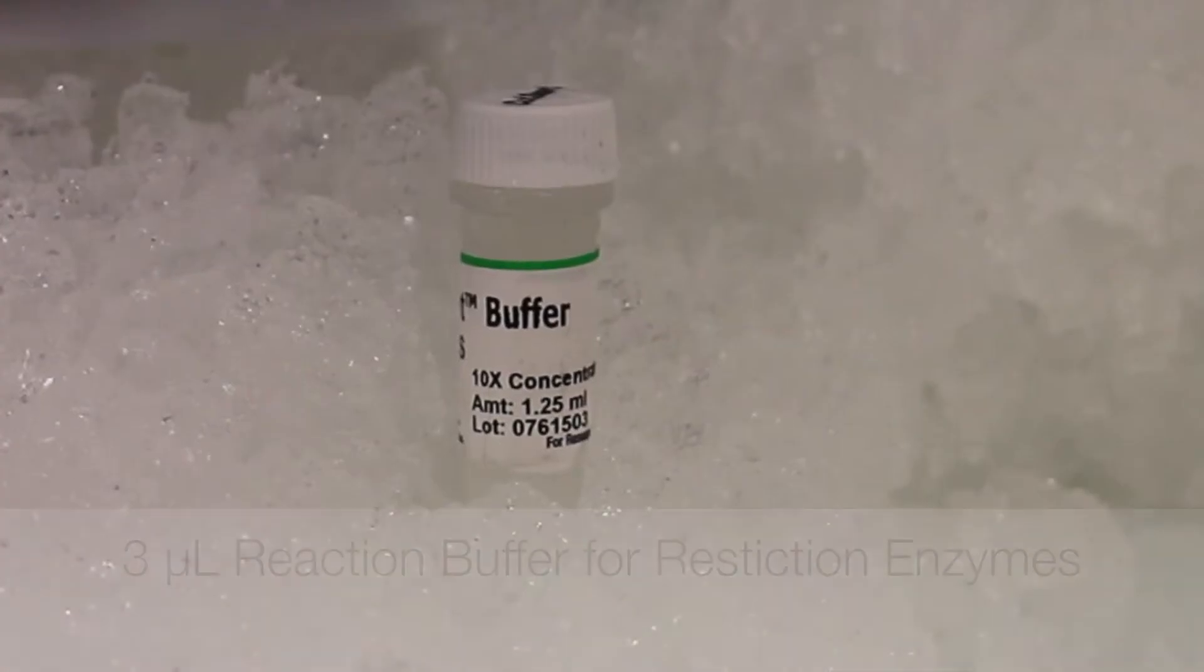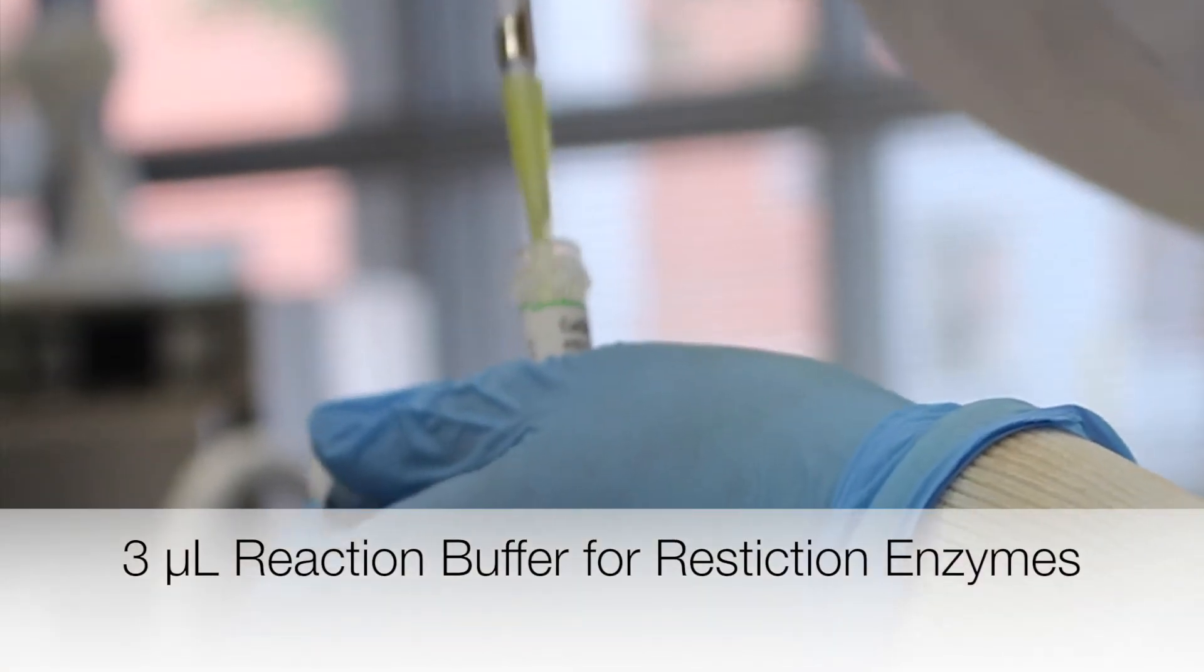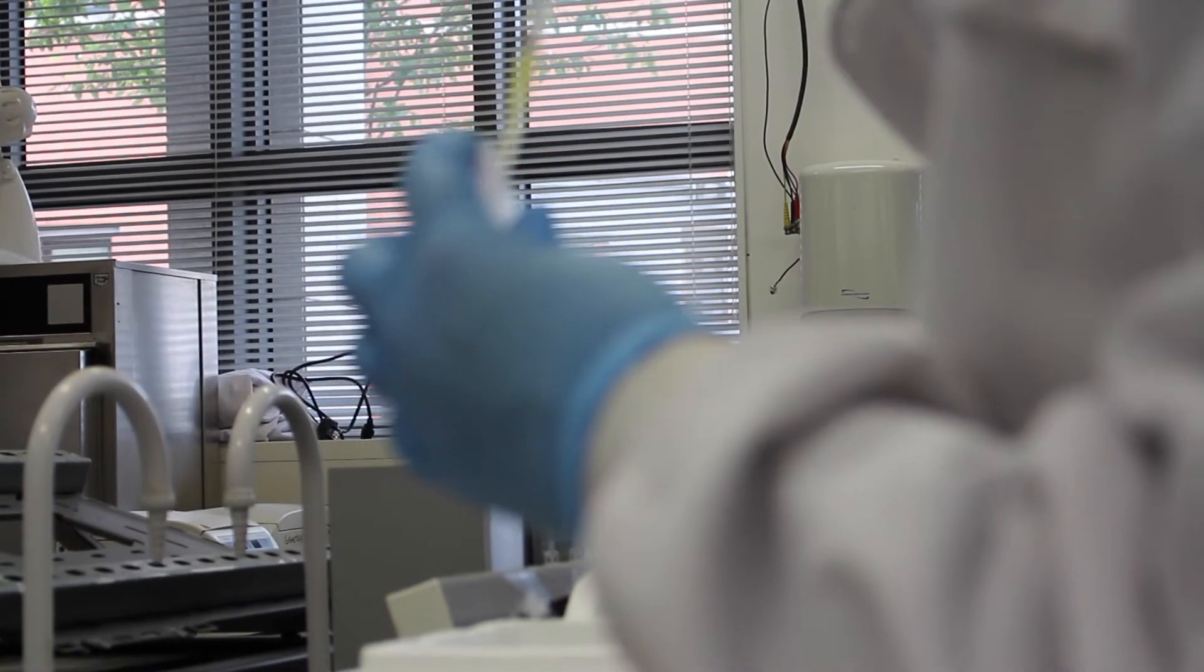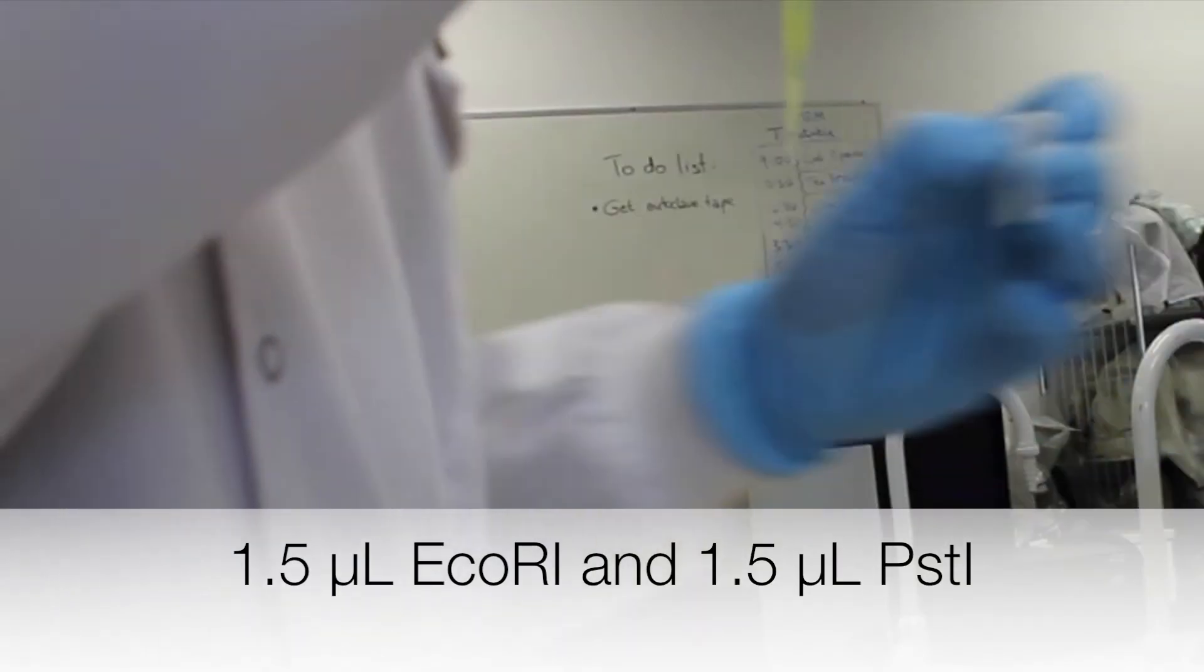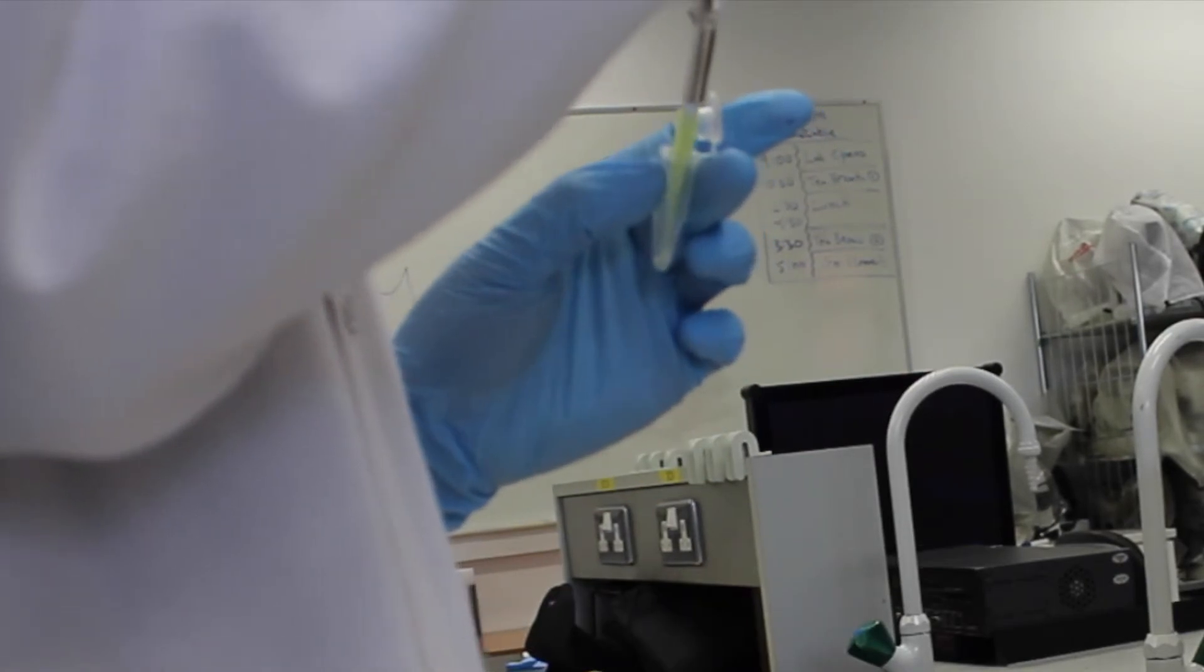Next, 3 microliters of reaction buffer for restriction enzymes is added. Now, 1.5 microliters of ECO-R1 and 1.5 microliters of PST-1 are added.